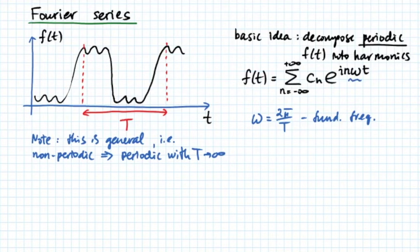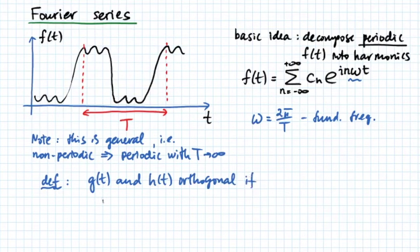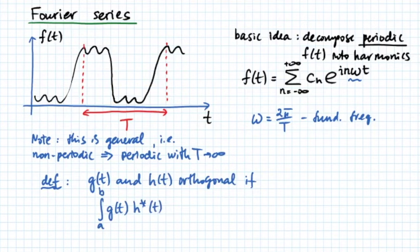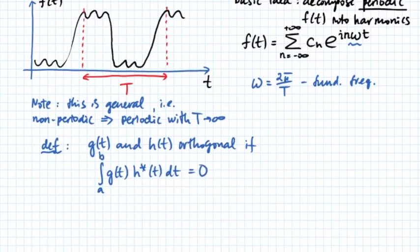We need a couple of definitions to make our job easier. First, we want to define orthogonal functions. We say that function g of t and h of t are orthogonal if, on a given interval, the integral g of t times complex conjugate of h of t dt is zero. In analogy with vectors, we can see that functions e raised to the power of n omega t, they form an orthogonal set.